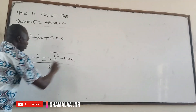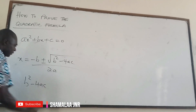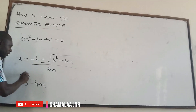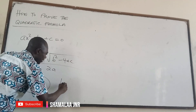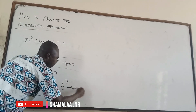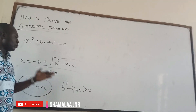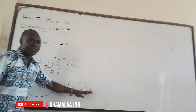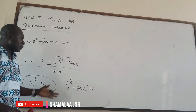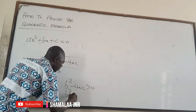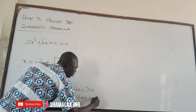Now, b² minus 4ac is called the discriminant. It is this value which determines the nature of the roots. When b² minus 4ac is greater than zero, you are going to get two real roots which are distinct or different.